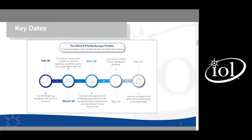I'm going to start by talking about some of the key dates for both the IPv6 Ready Logo and USGv6 test programs. Back in June of 2020, Ready Logo stopped accepting applications for the version 4.0.8 core test specification, which was primarily focused on RFC 2460, now obsoleted by RFC 8200. To qualify for Ready Logo, you must now test for the new 5.1 test spec based on all the latest IPv6 RFCs.